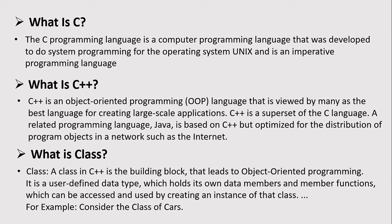What is a class? In C++, a class is the building block that leads to object-oriented programming. It is a user-defined data type which holds its own data members and member functions, which can be accessed and used by creating an instance of that class. For example, consider the class of cars.